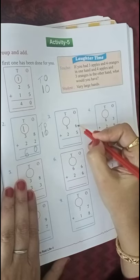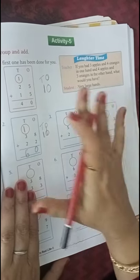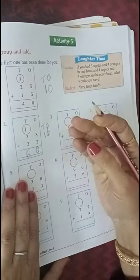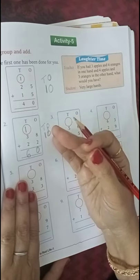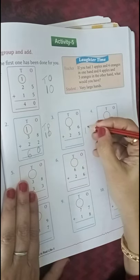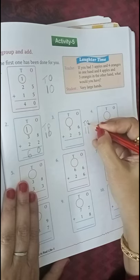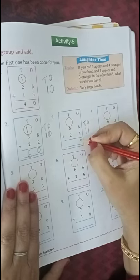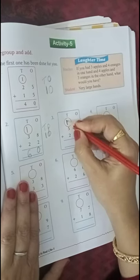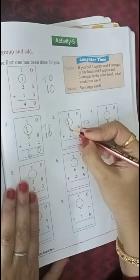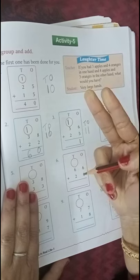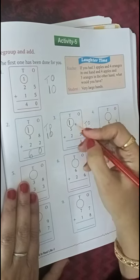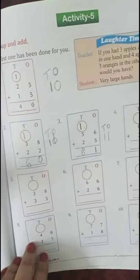Third sum. 6 plus 5. Keep 6 in your mind and 5 in your fingers. After 6, 7, 8, 9, 10, 11. So 11 is the number. Below ones, 1 is there, so write 1 here. 1 ten goes here. 5 plus 2, keep 5 in the mind, 2 in the finger. After 5, 6, 7, plus 1, 8. So this way you can complete the rest of the sums. Page number 89.